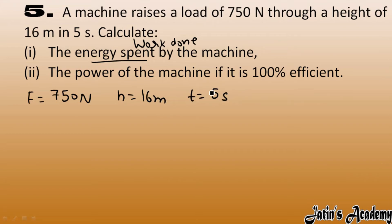So simply, work done we have to calculate as force into displacement. Force value 750 Newton and displacement we have 16 meters. Multiply this, we get 12,000 joule or 12 kilojoule.